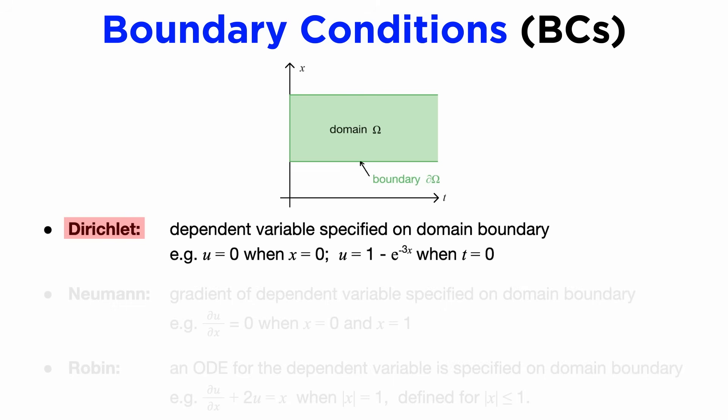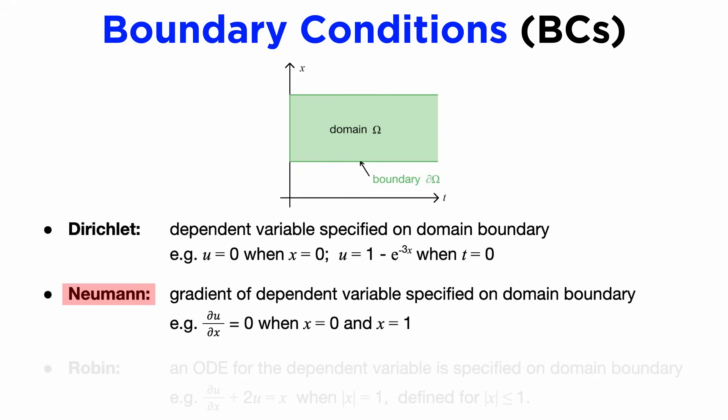The first is the Dirichlet type, which is where we specify the function u at a given value of one of the variables, like an initial condition from ODEs.